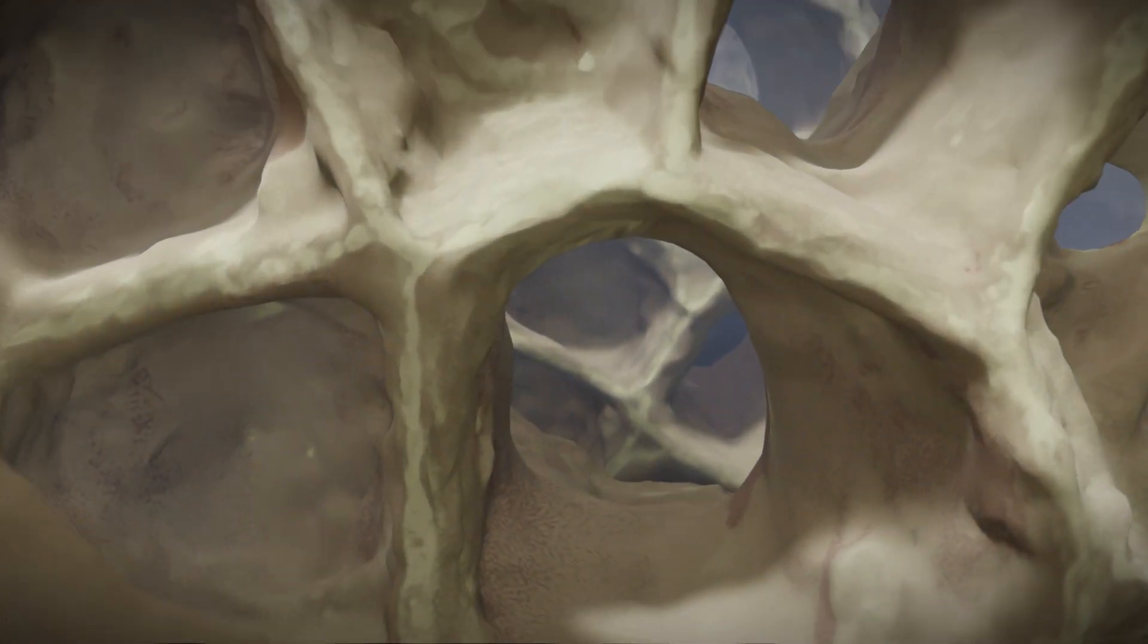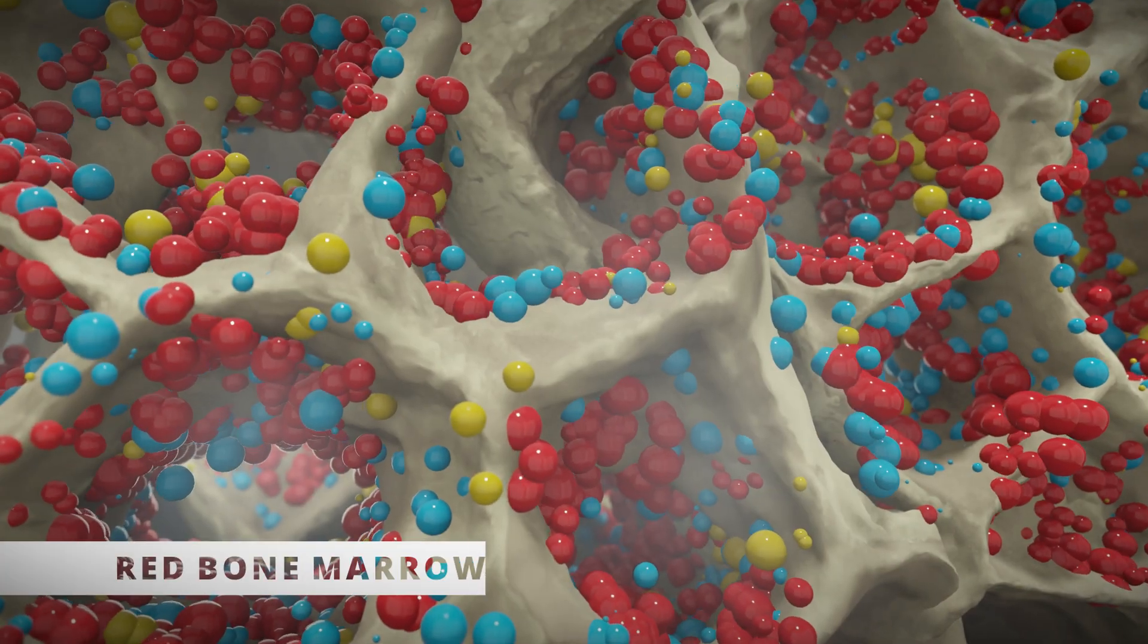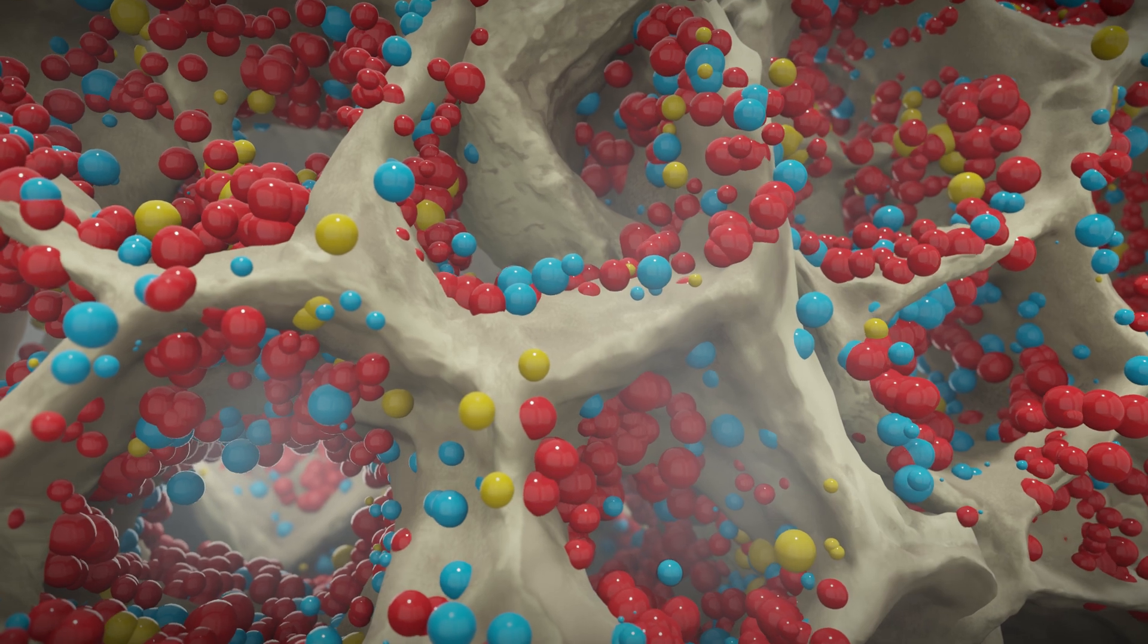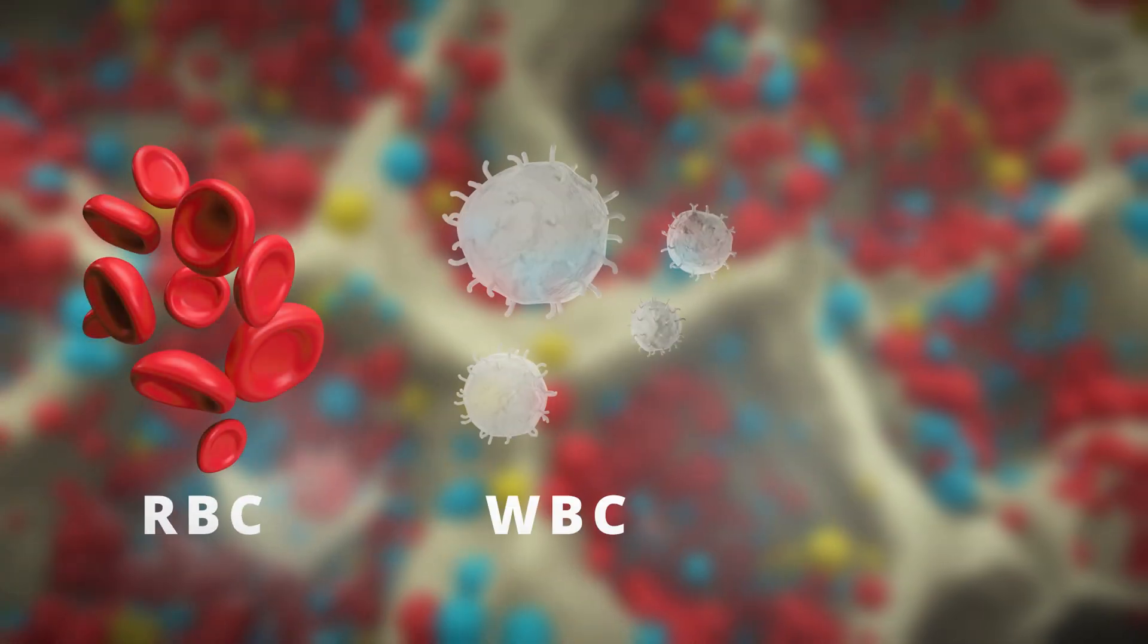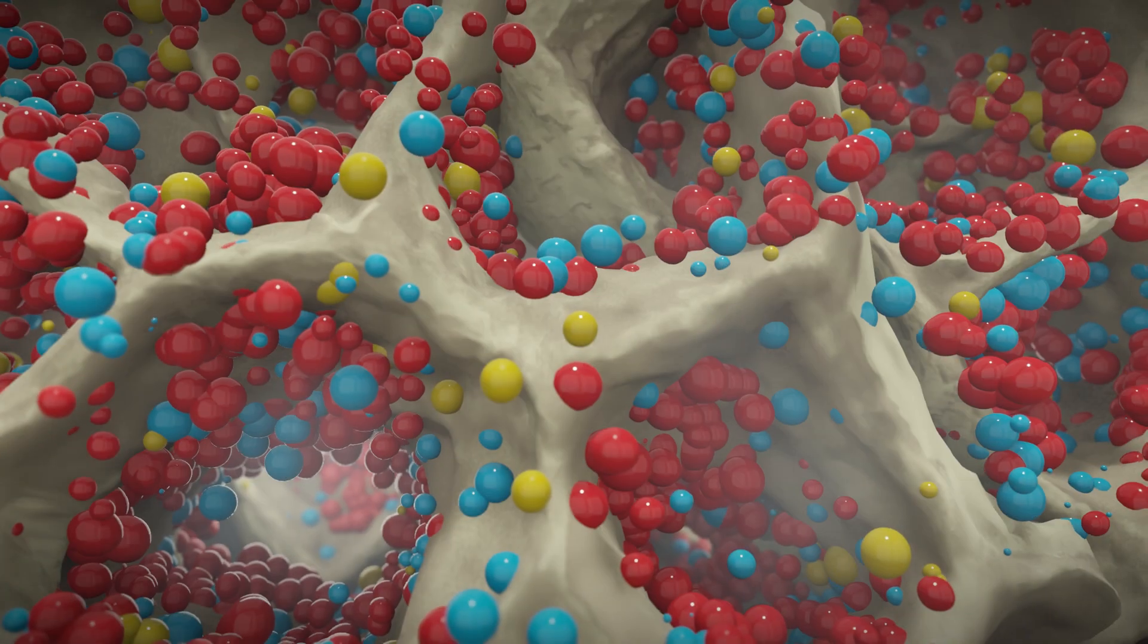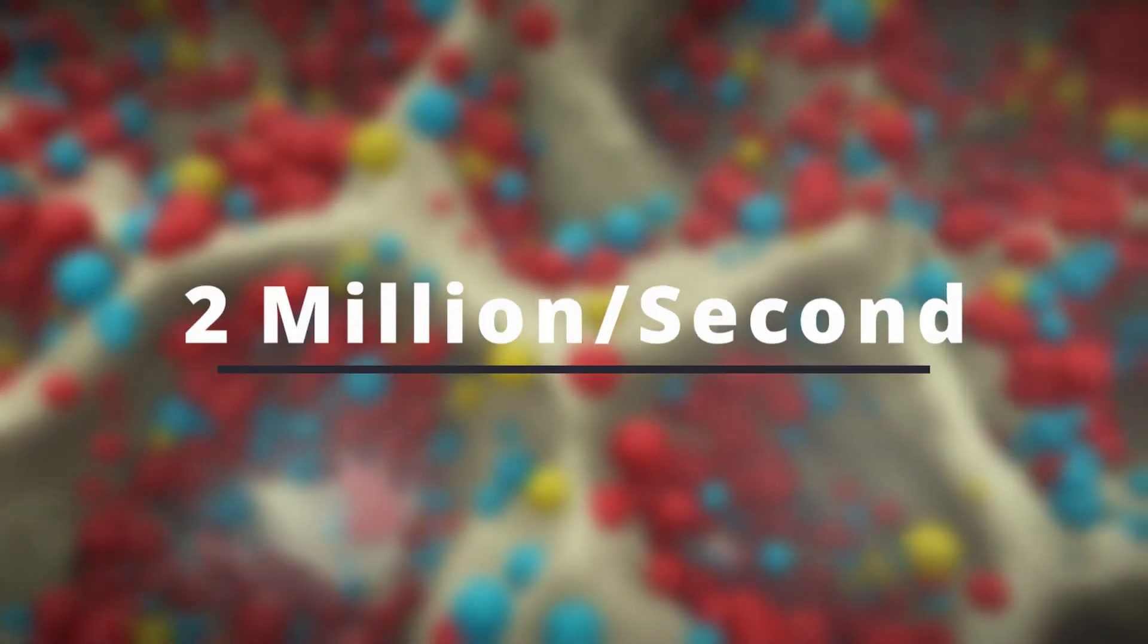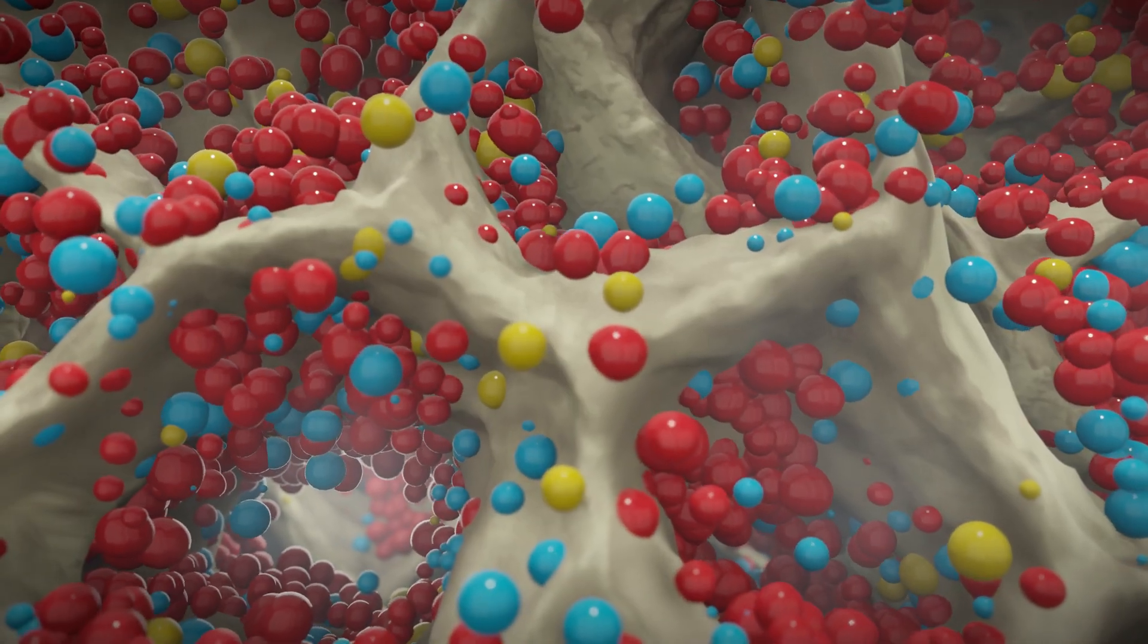Inside the spongy bone, in its hollow part, is red bone marrow which produces all types of blood cells like RBC, WBC, and platelets. Let us tell you that 2 million red blood cells are produced here every second.